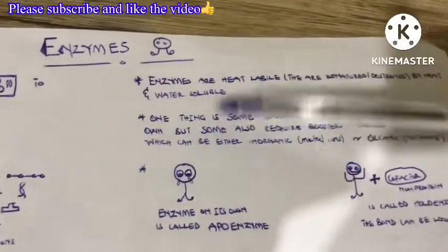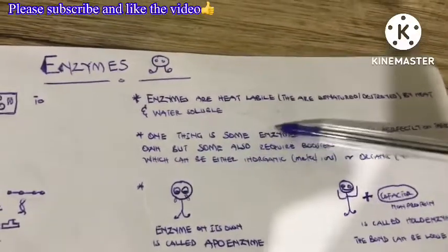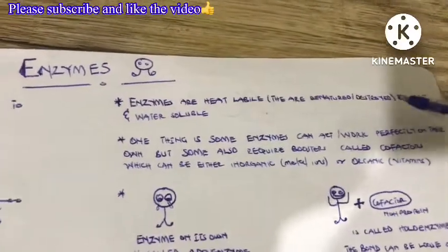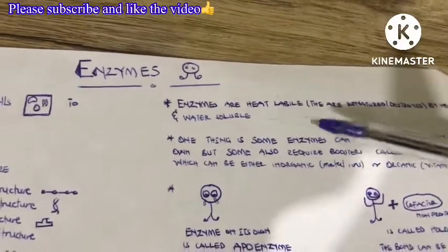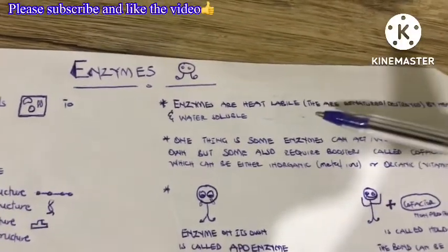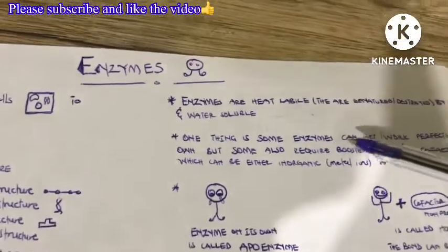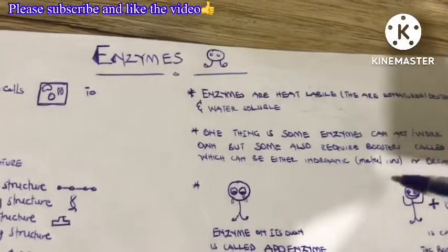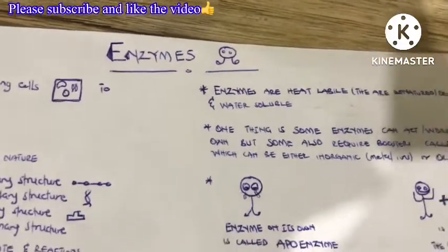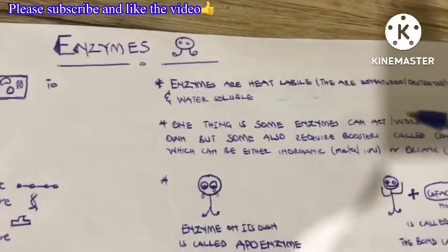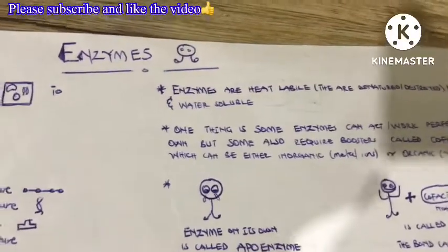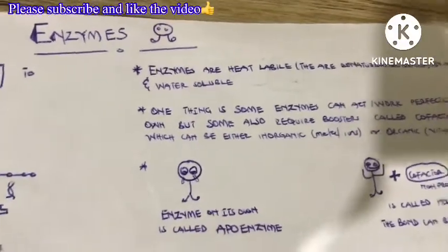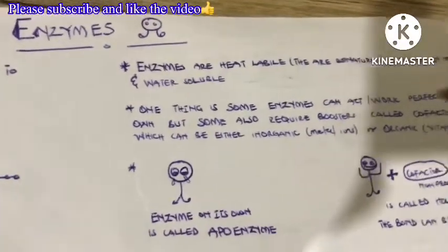These enzymes are heat labile, meaning they are denatured or destroyed by heat. They are also water soluble. But not all enzymes are heat labile — we have enzymes called thermozymes which are actually resistant to heat. So the statement 'all enzymes are heat labile' is false, because we have thermozymes which are resistant to heat.